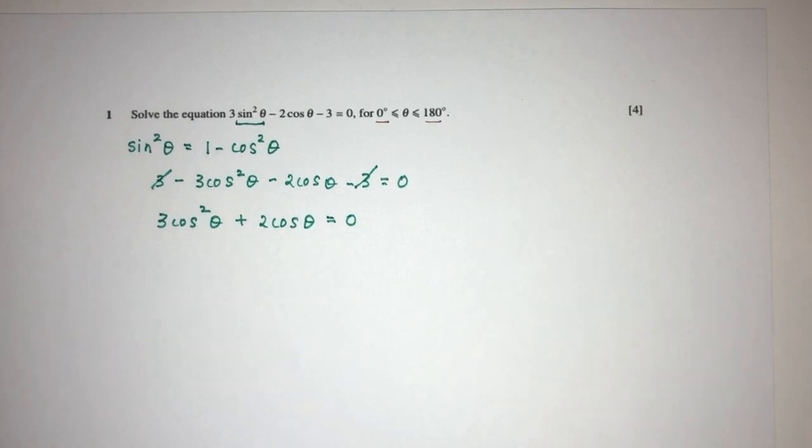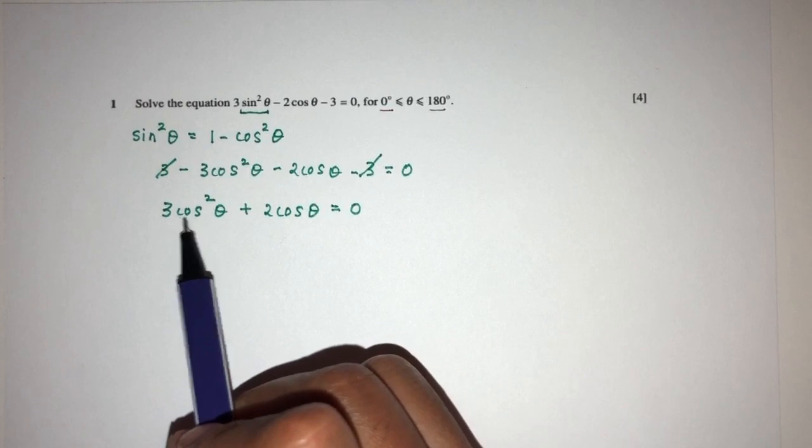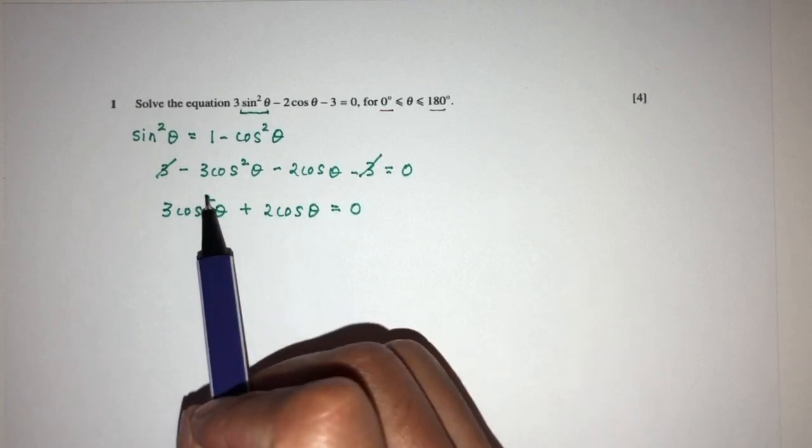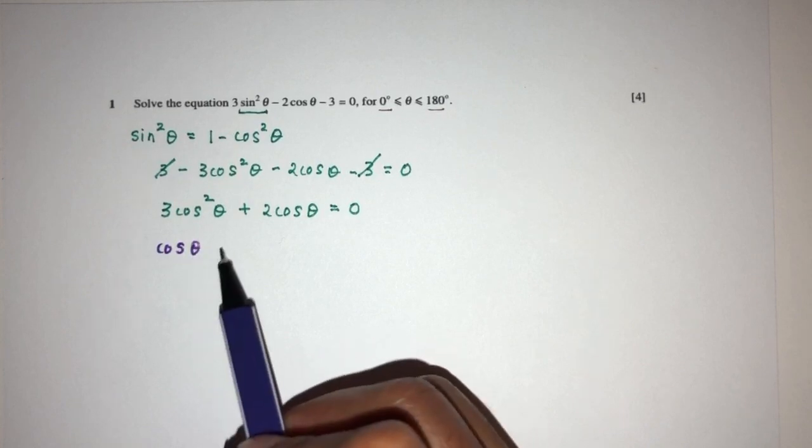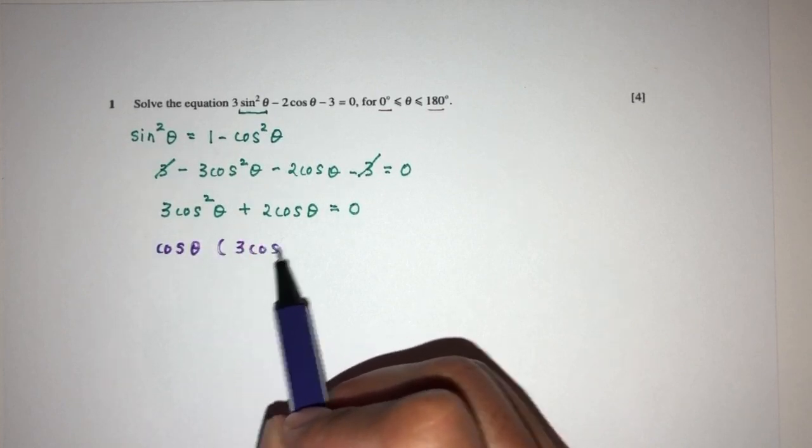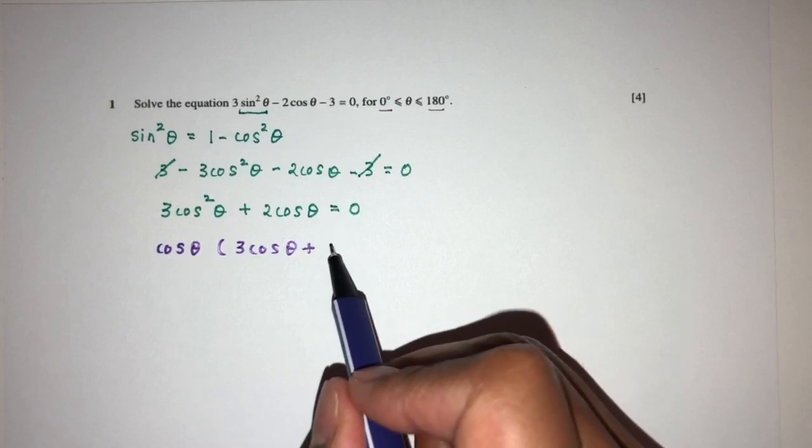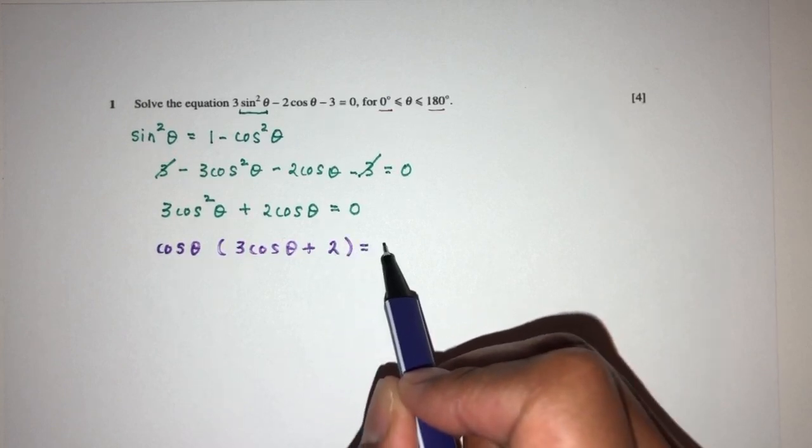Now from here we can actually factorize this equation, because here we have cos square and cos, so you will have factorized cos theta outside. So you will have cos theta times 3 cos theta plus 2 equal to 0.